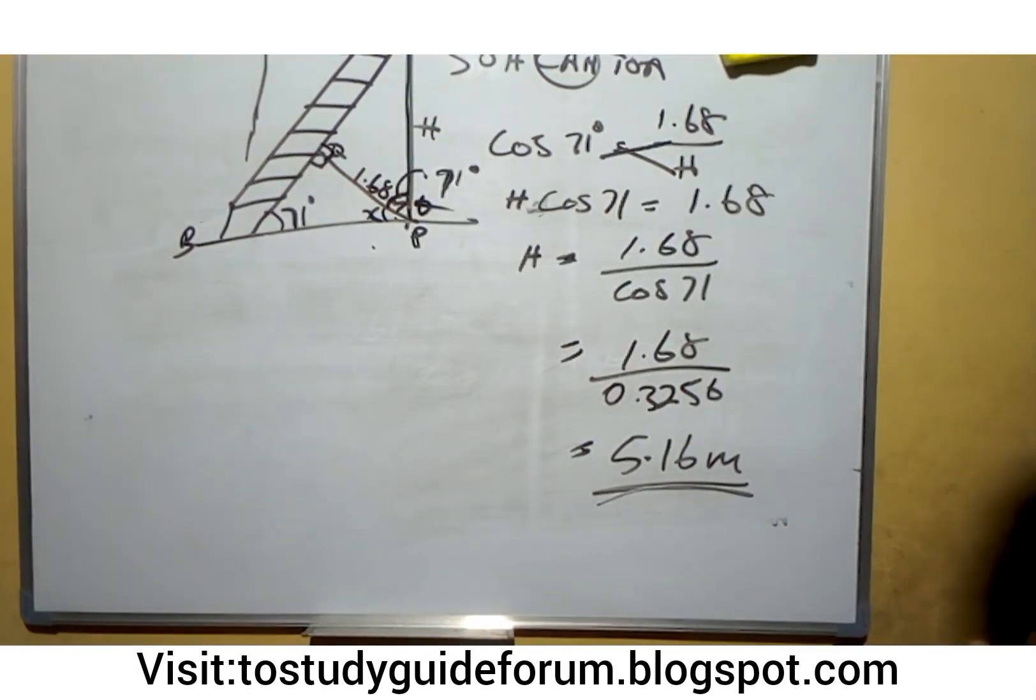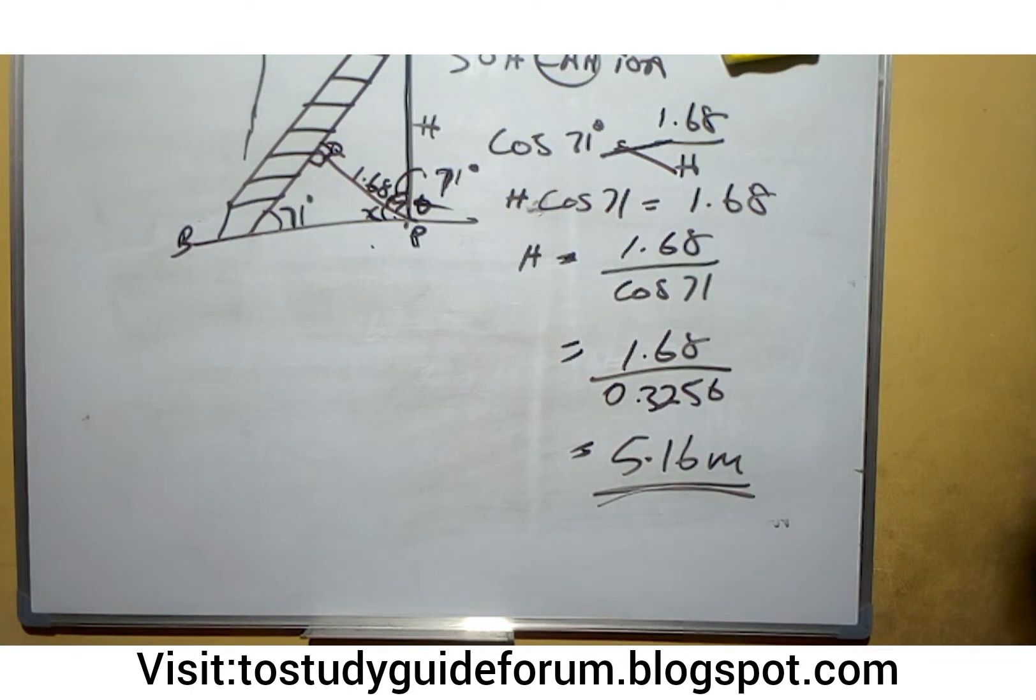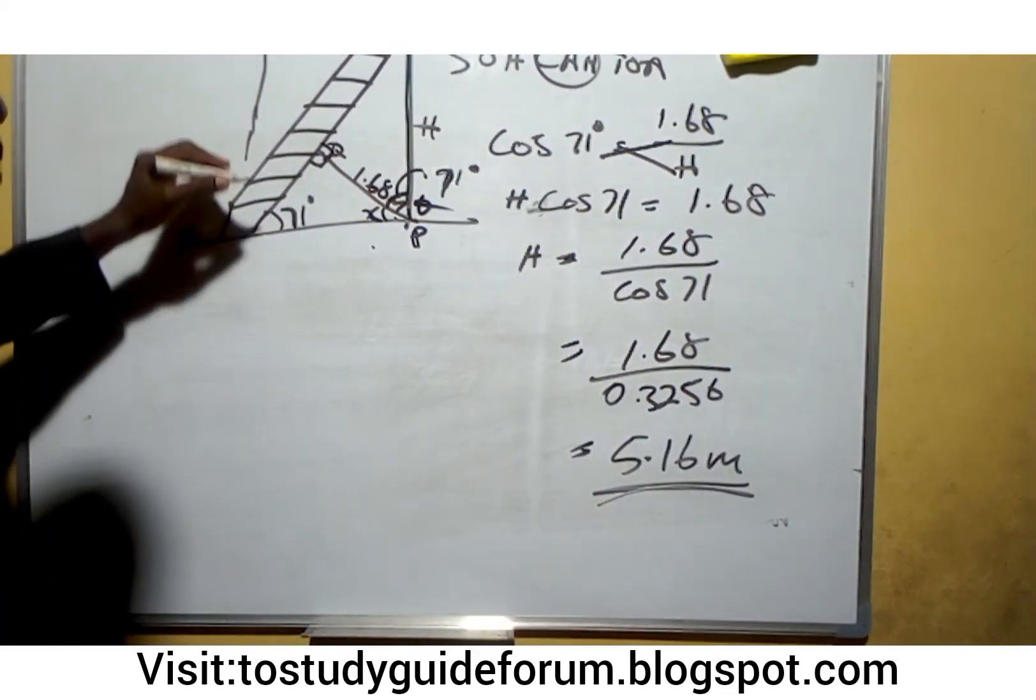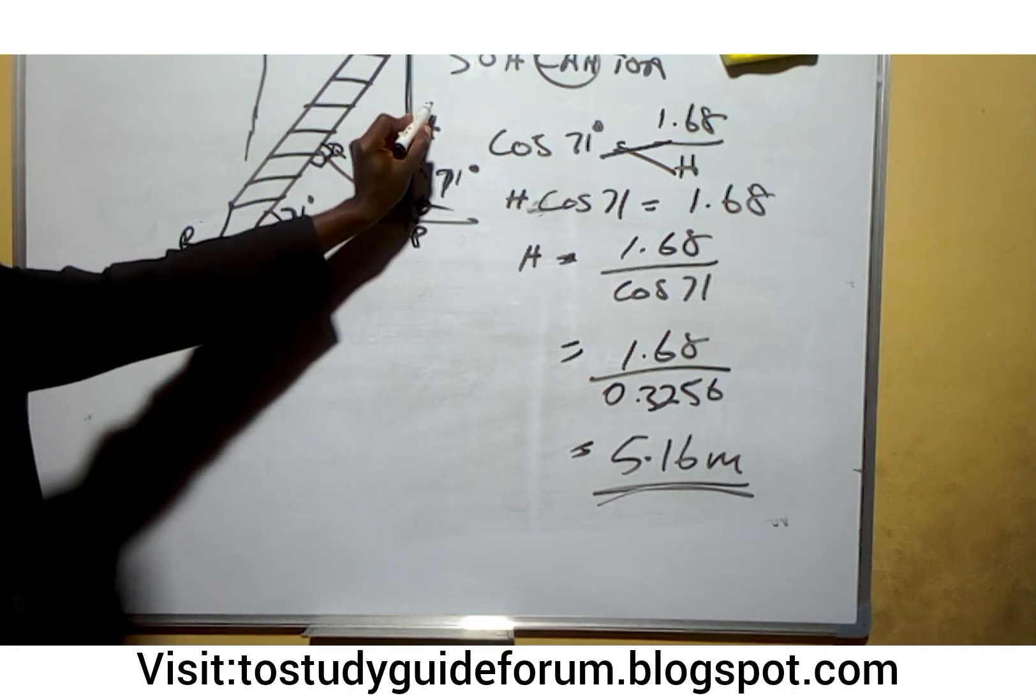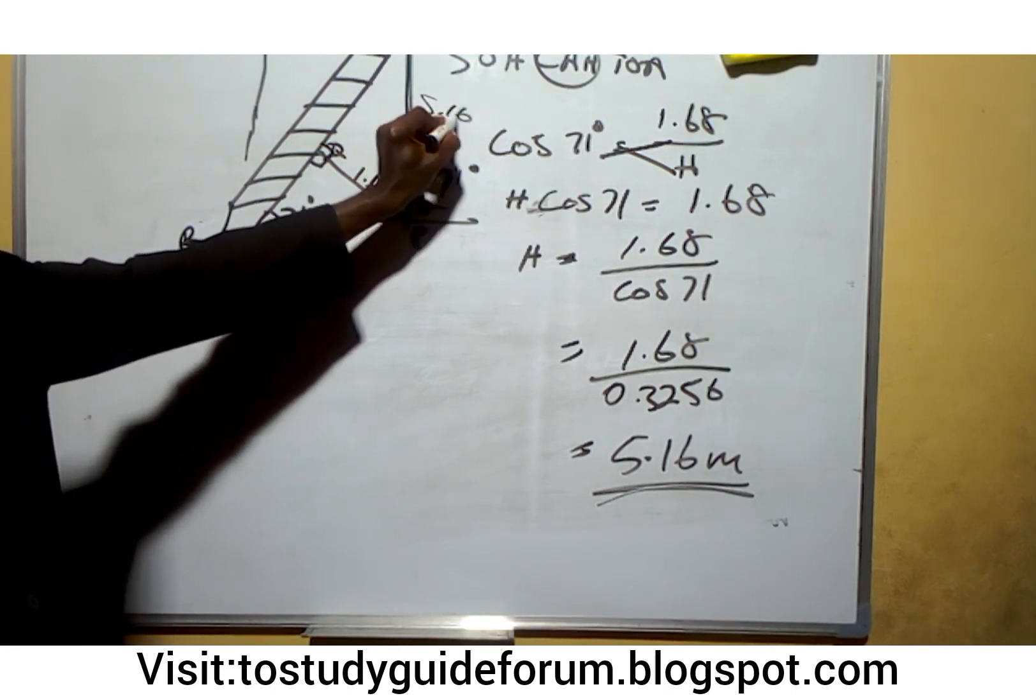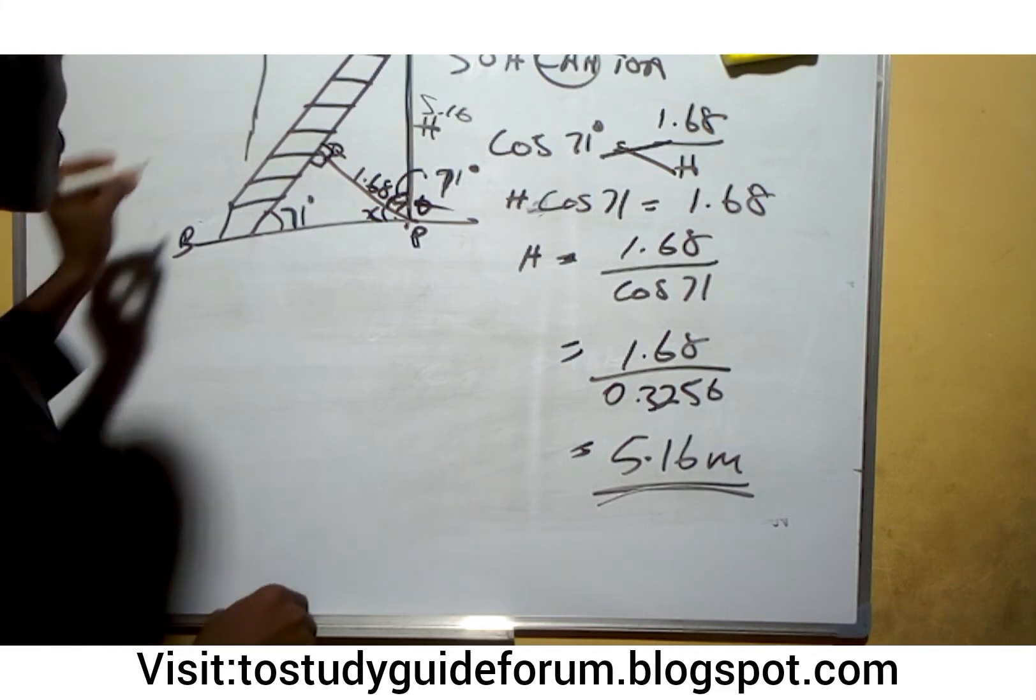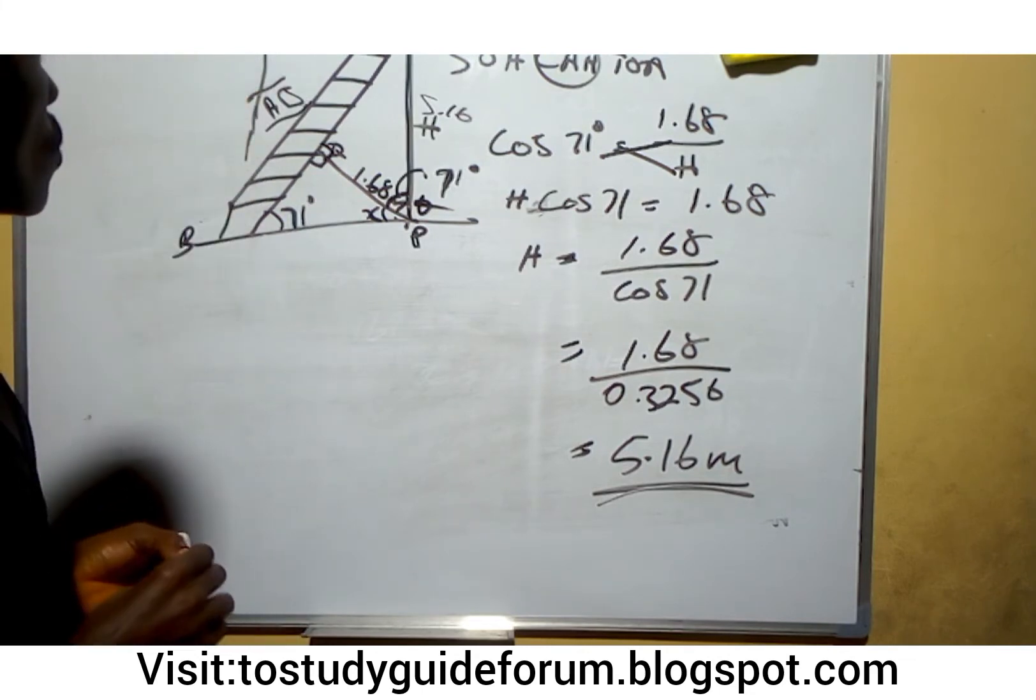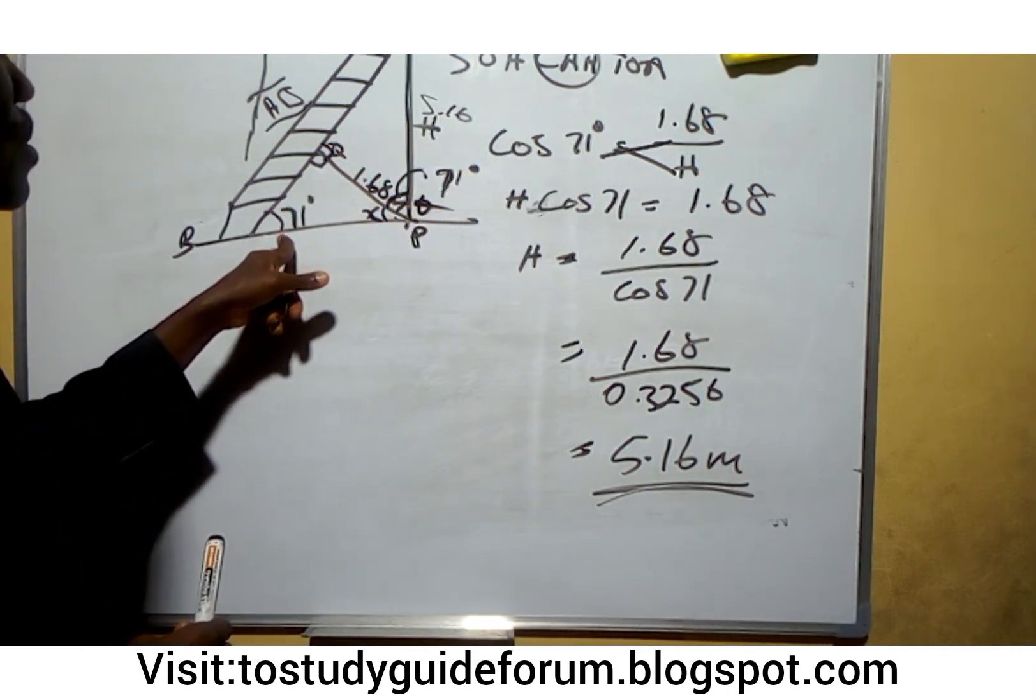The next one, the question says we should find the length of the ladder. To get the length of the ladder now, we can also use our angle. Since we have this one to be 5.16 meters, but we don't know this one, we are looking for this. This is our AB that we are looking for.